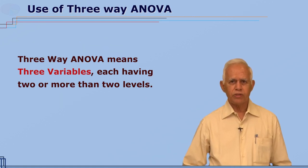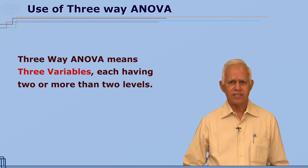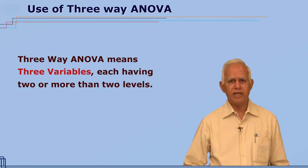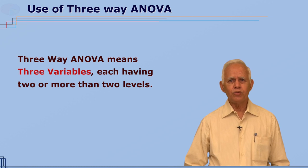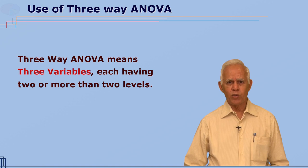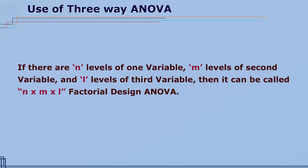When to use three-way ANOVA? The three-way ANOVA must be used if a researcher has three variables and each variable must have a minimum of two levels. If there are two levels of each variable, this is called a two by two by two factorial design ANOVA, or three-way ANOVA. If there are n levels of one variable, m levels of another, and l levels of the third, it is called an n by m by l factorial design ANOVA.